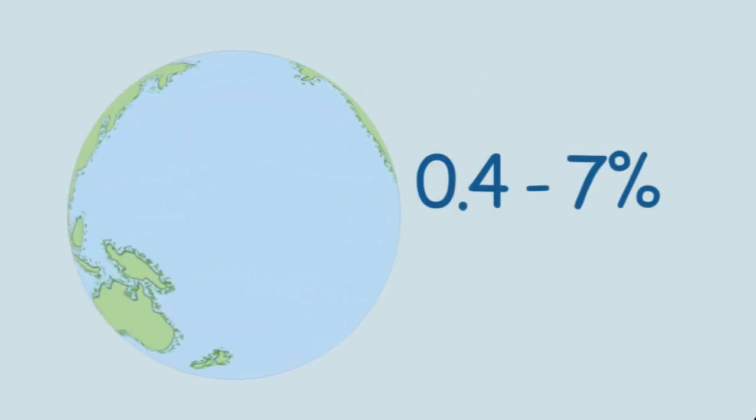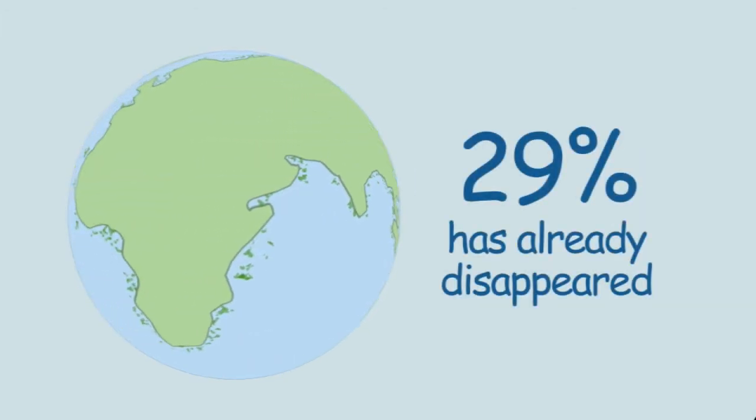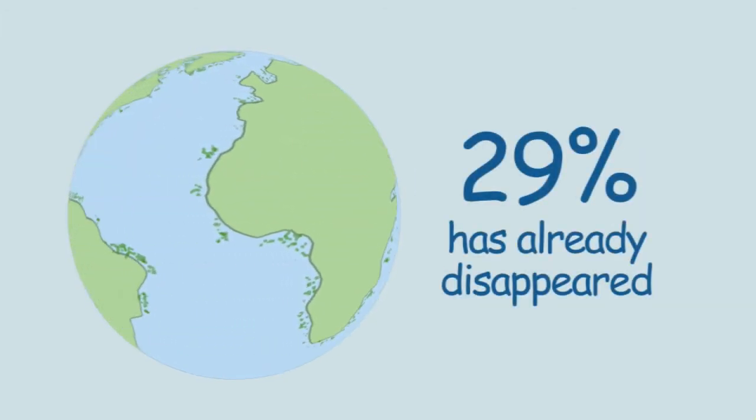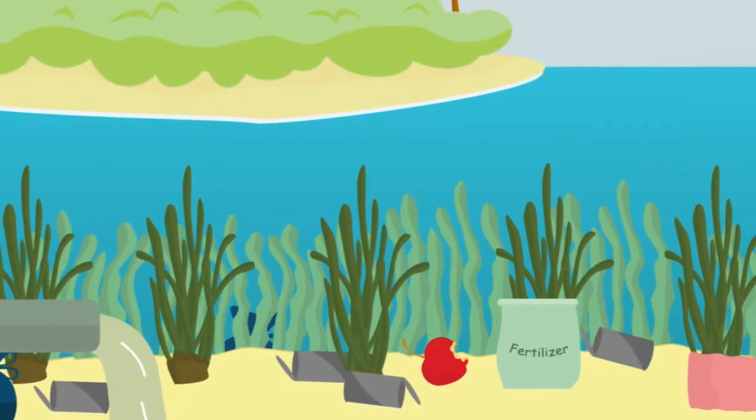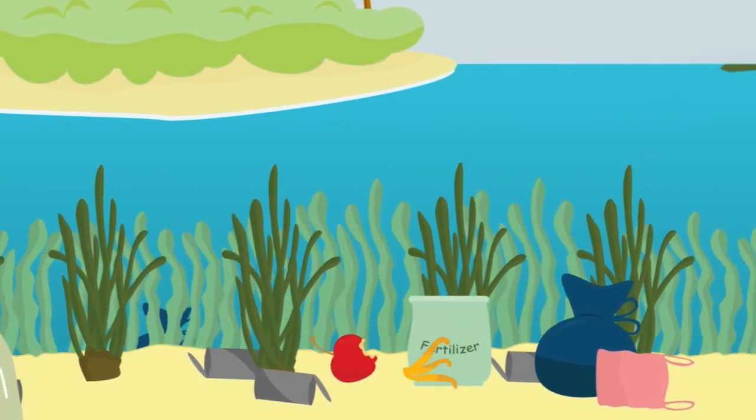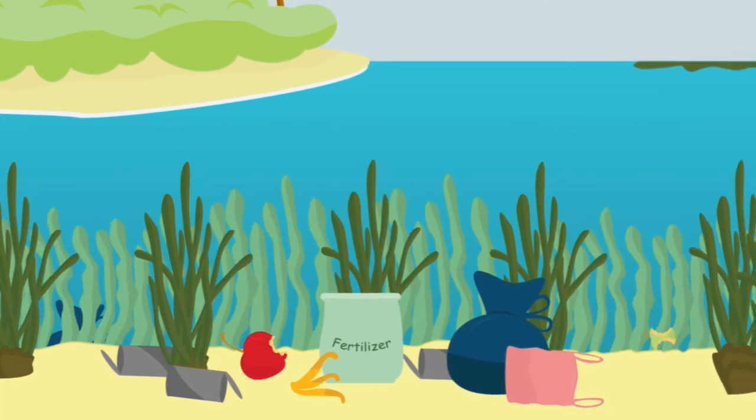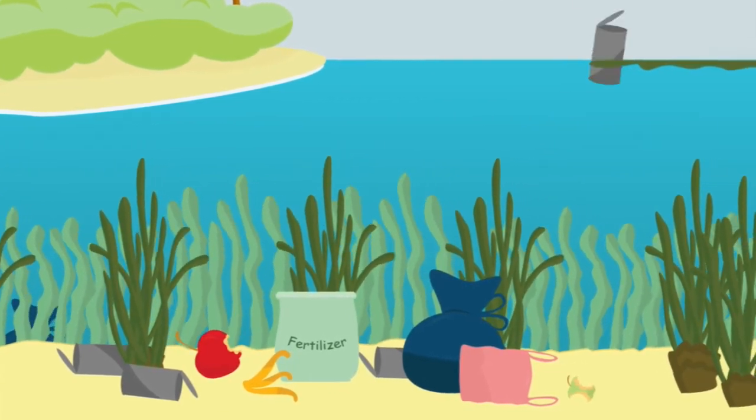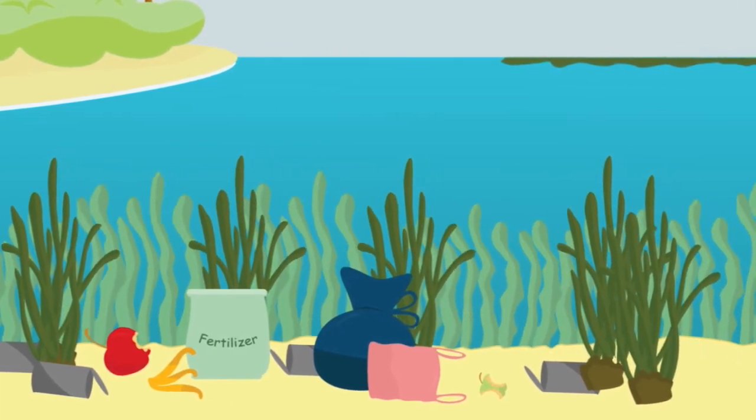Seagrass beds are being lost at an estimated rate of 0.4 to 7% per year. A startling 29% has already disappeared. The key factors that contribute to seagrass imbalance are excessive nutrients that seep into the sea from sewage, food waste, and fertilizers, and sedimentation, which is when sand and other particles in the water block the sun from reaching the seagrasses.